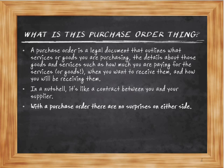Let's cover what is a purchase order. A purchase order is a legal document. It outlines what it is you're purchasing, how much you're expecting to pay for these goods and services, when you want to receive them, how you're receiving them — are they being delivered, are you picking them up, are they being shipped out, is it being blind shipped? In a nutshell it's a contract between you and your supplier or decorator, and with a purchase order there's no surprises on either side.